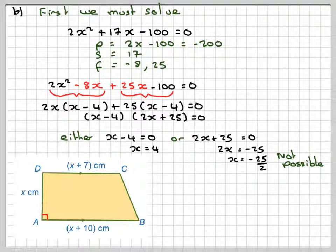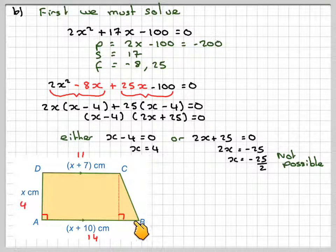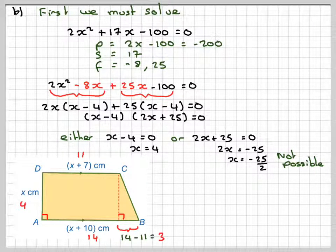Going back to our diagram, we have to calculate the perimeter. The perimeter is the distance all the way around the outside of the shape. However, we don't have this side here. If we drop this down, and we know that this is 4, and this will be 11, 4 plus 7, and this will be 14, then we know that this length here will be 14 minus 11, which is equal to 3.